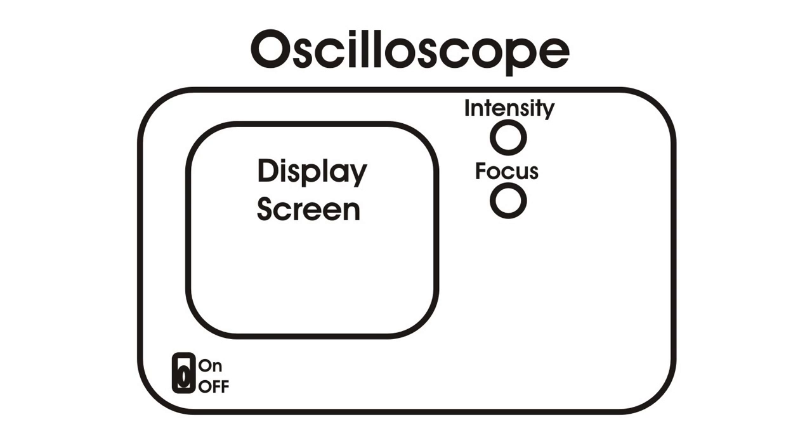There is an intensity control and a focus control for the display screen, and of course we have an on-off switch. This is the vertical input. This is where the signal that's under test enters the oscilloscope.